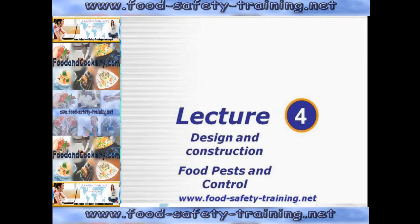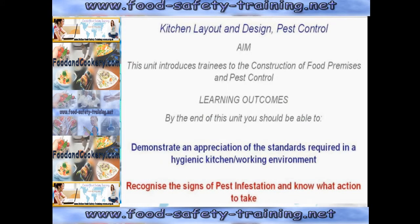Design and construction of food premises and food pests and control. The aim of this unit is to introduce you to the construction of food premises and pest control. By the end of this unit you should be able to demonstrate an appreciation of the standards required in a hygienic kitchen working environment, and recognise the signs of pest infestation and know what action to take.